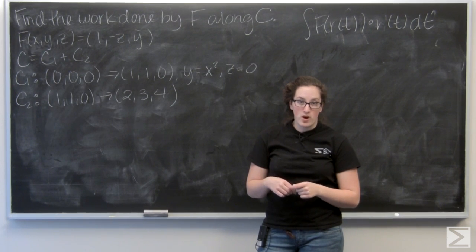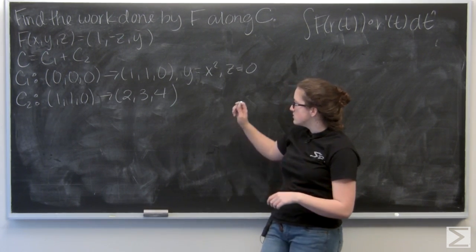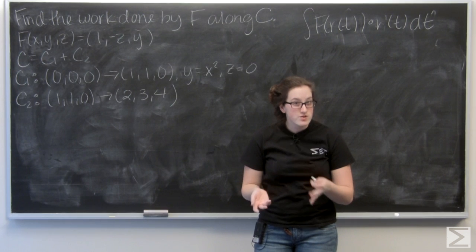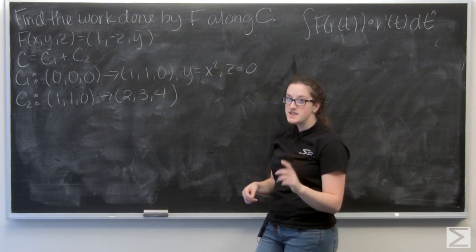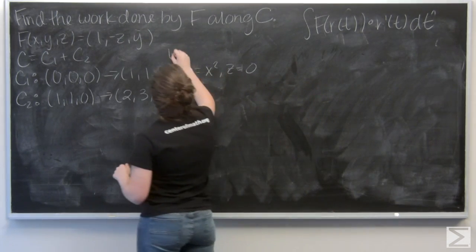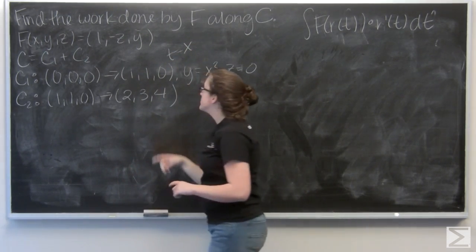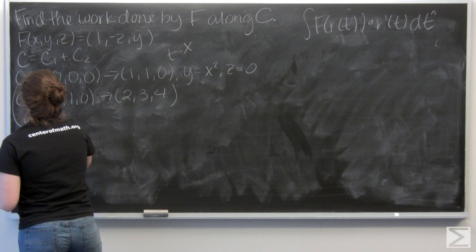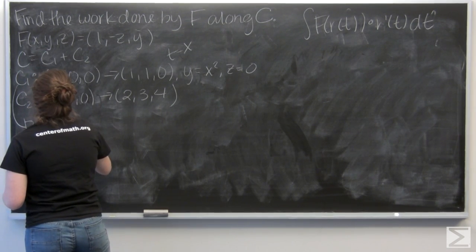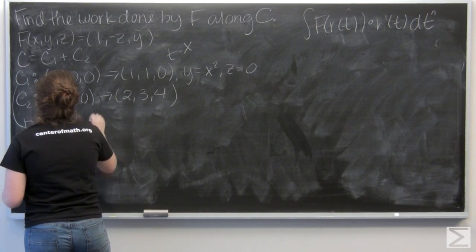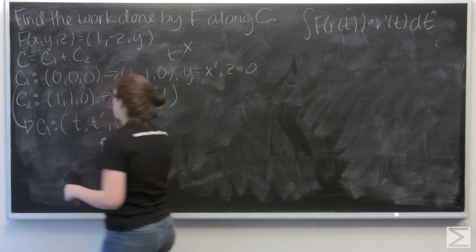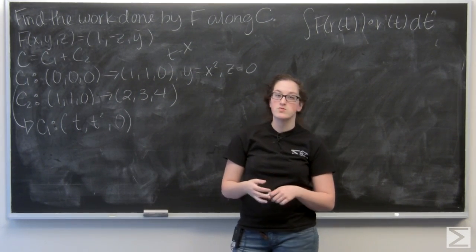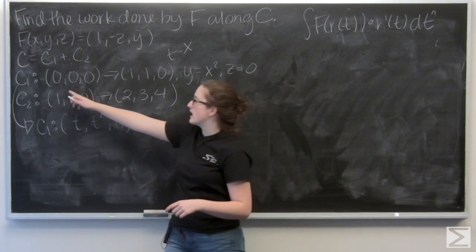So, let's start by parametrizing c1 so I can calculate my first integral. So, I know y equals x squared and z equals 0. So, I'm going to try to make it as easy as possible and say that t equals x. So that makes y equal t squared and then x is just going to be t.